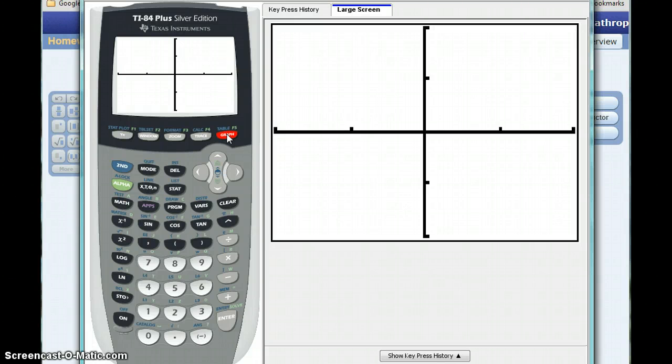Now in this case, I can't see the graph at all. I have a coordinate axis here, but there's no graph drawn. The reason being is that my window settings are probably incorrect for this graph. This is sort of the trick with graphing with a TI calculator.